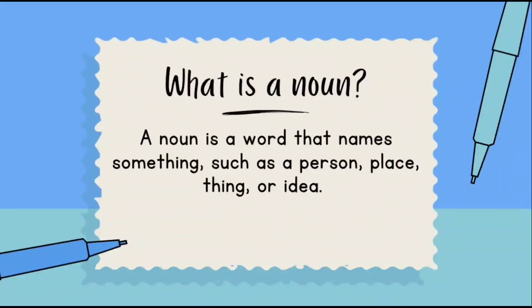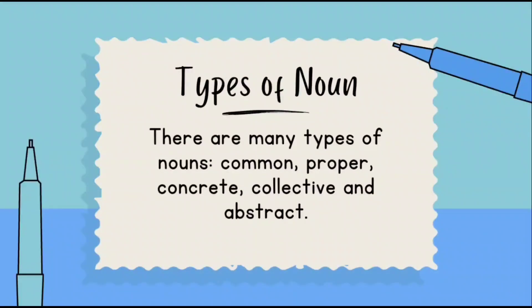A noun is a naming word — that we already know. A noun is a naming word which names a person, place, thing, or idea. That's very simple, that is what we have been learning from childhood.